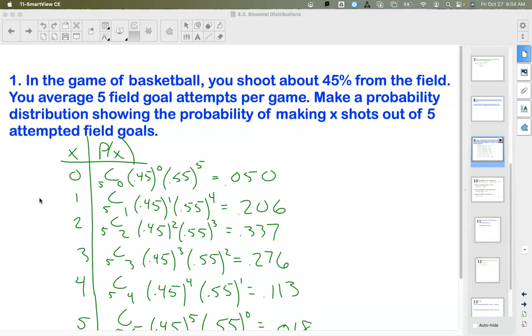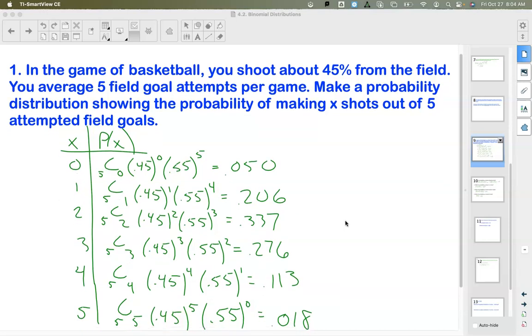Hey, stats folks. Today we're going to keep working with our binomial probability distributions, but I want to help us be a little bit more efficient and show you some things you maybe haven't thought of and how you can use your calculator to work through things a little bit quicker. Here's that same example we were working with last time where we've got five field goal attempts. You shoot about 45% from the field. We made a probability distribution that showed how many makes, zero up to five makes, out of the five shots that we attempt.